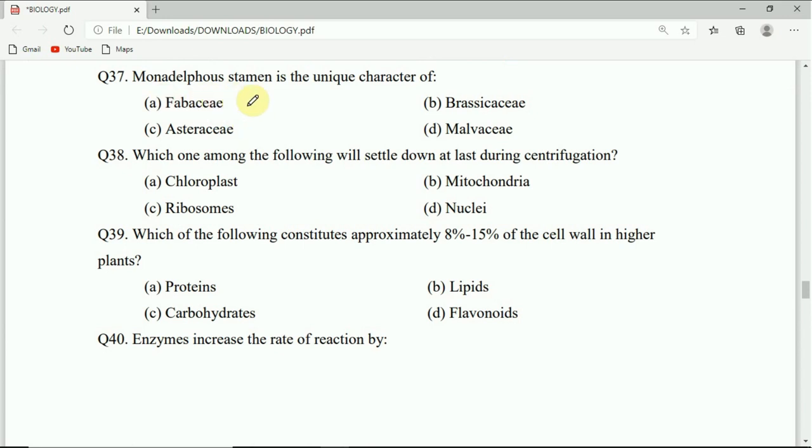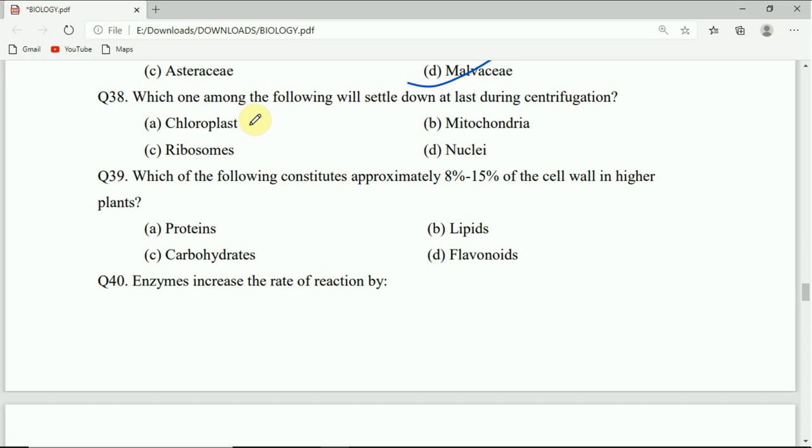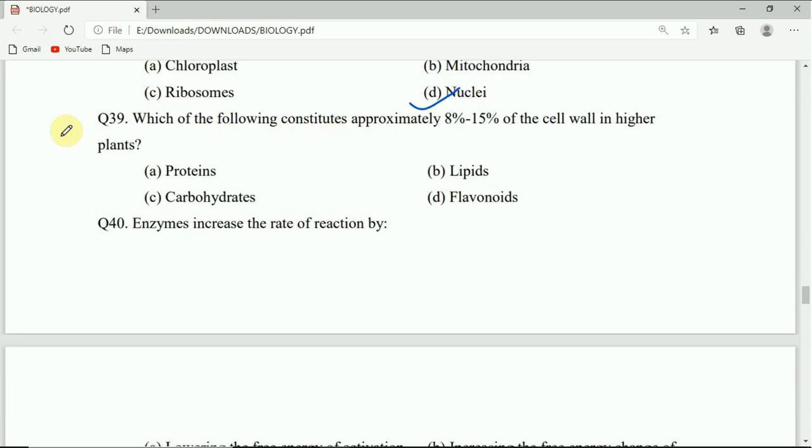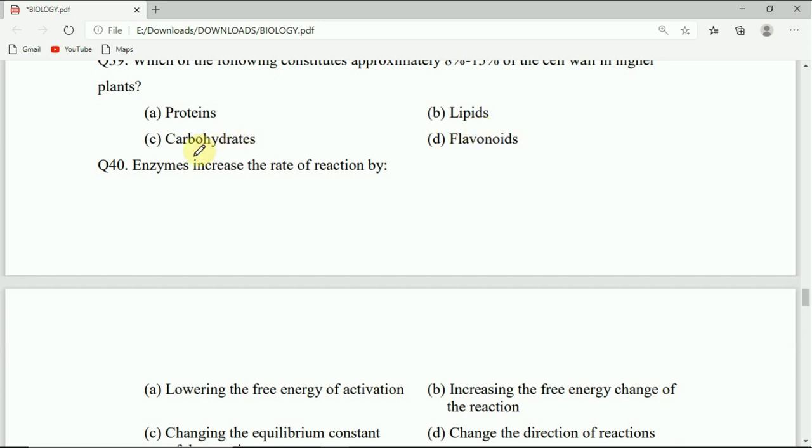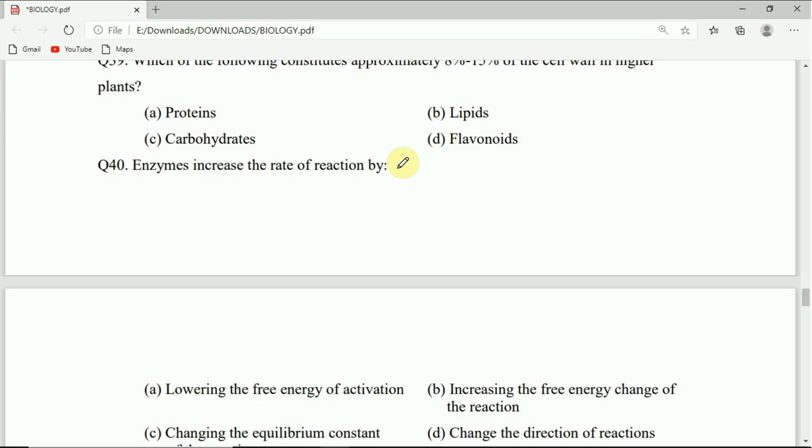Monadelphous stamen is the unique character of which plant family. Question 39: Which of the following constitutes approximately 8 percent to 15 percent of the cell weight in higher plants - proteins, lipids, carbohydrates, or flavonoids. Correct answer is A or B.